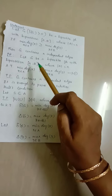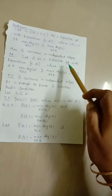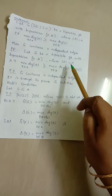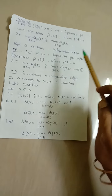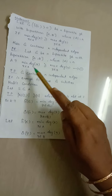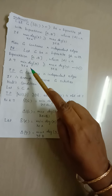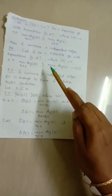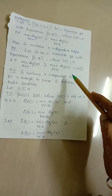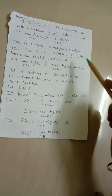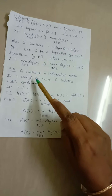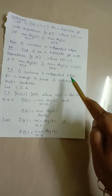We assume G is a bipartite graph with bipartition A, B, and cardinality of A is equal to N. The given condition is also taken: minimum degree of x, where x is in capital A, is greater than or equal to maximum degree of y, where y is in capital B. Our aim is to prove G contains N independent edges.